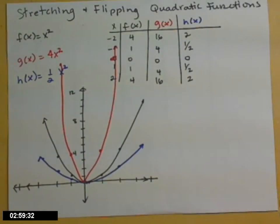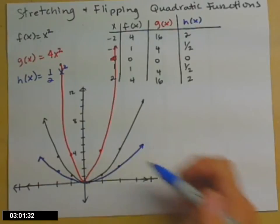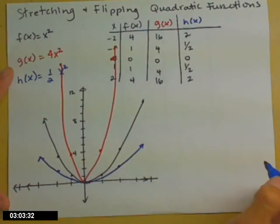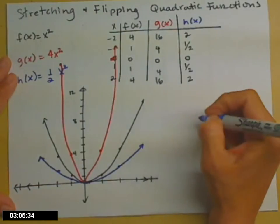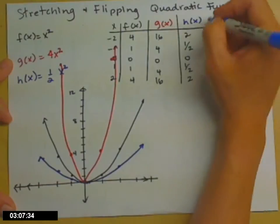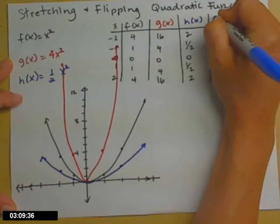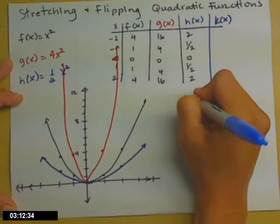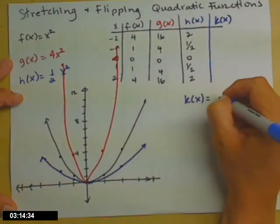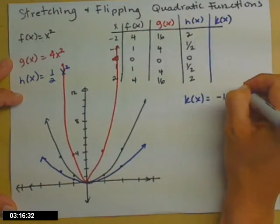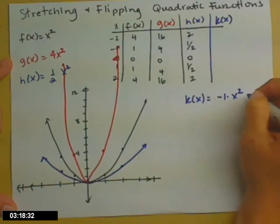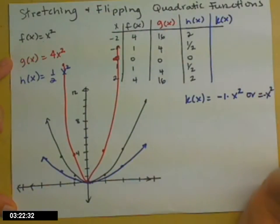Now, so that's how we stretch it. Or in this case, when it's wider, we flatten it out. In order to flip it, we need a negative sign. So let's go ahead and add in a new function up here: k(x). And we'll let k(x) equal just -1 times x², or just -x².